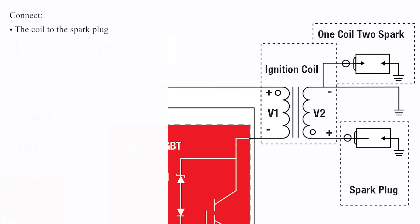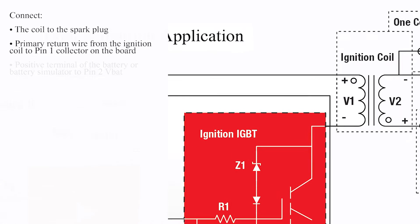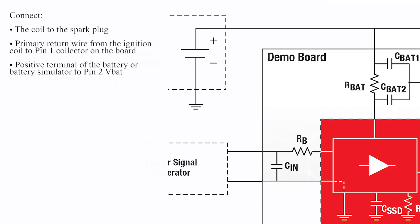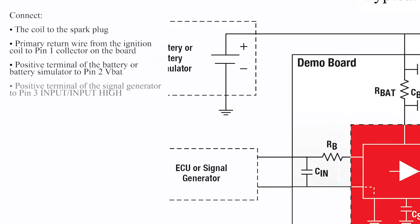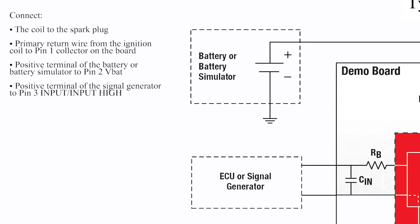Connect the coil to the spark plug. Connect the primary return wire from the ignition coil to Pin 1 Collector on the board. Then connect the positive terminal of the battery or battery simulator to Pin 2 V-BAT. Connect the positive terminal of the signal generator to Pin 3, Input High.